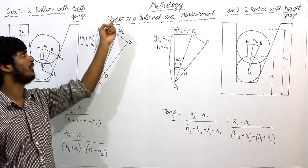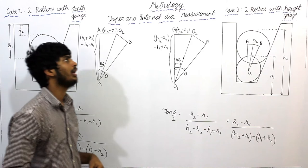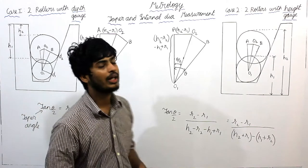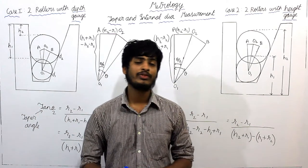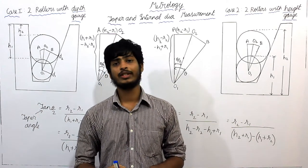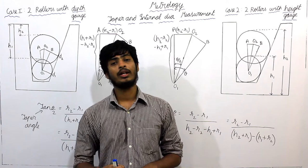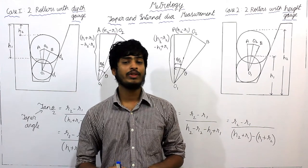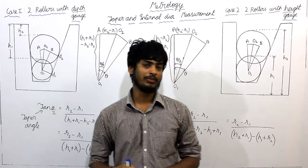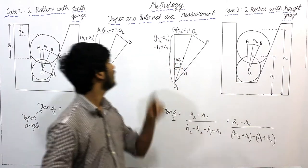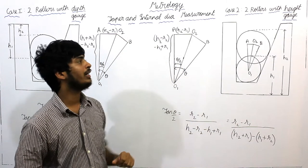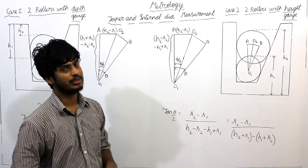Under metrology, the third unit is taper and internal diameter measurement. The first unit covered limits, fits, and tolerances; the second unit covered angle measurements; and the third unit is taper and internal diameter measurements.